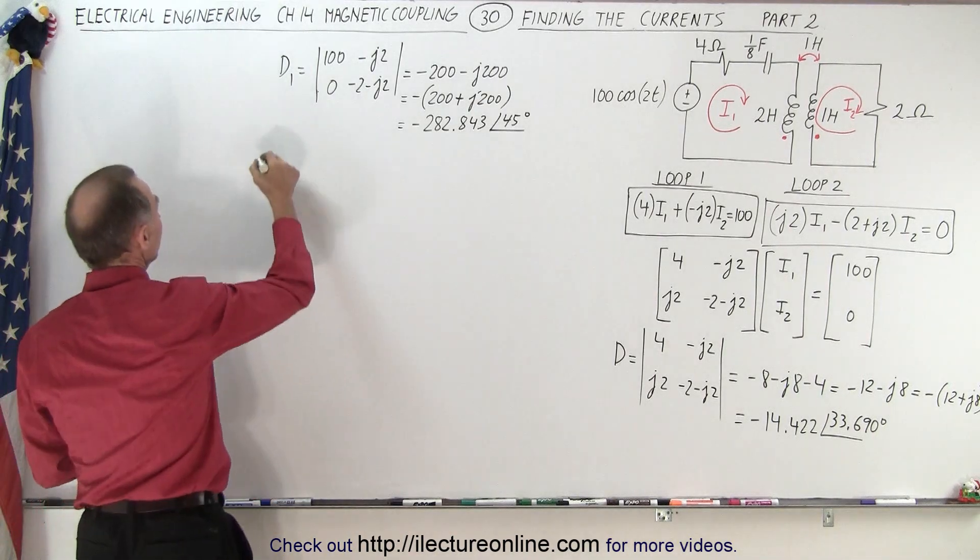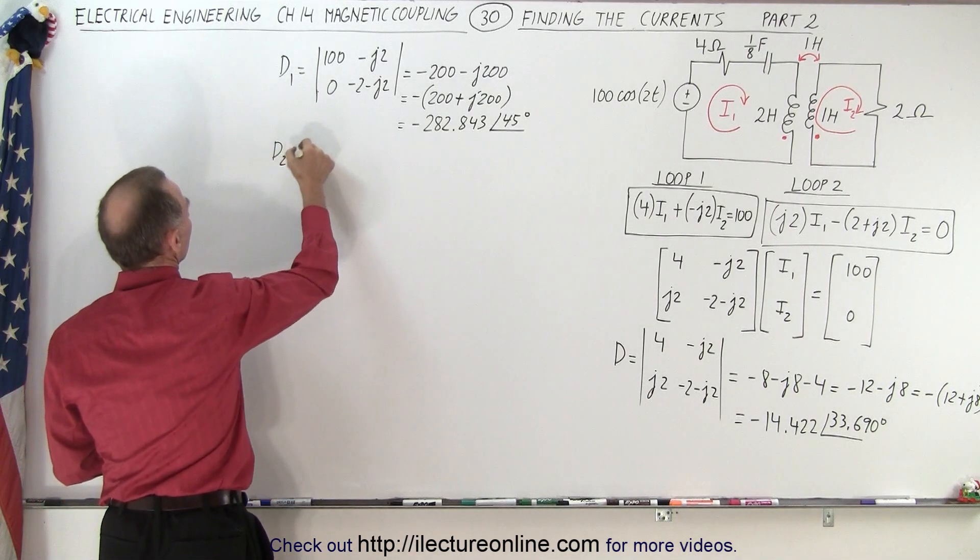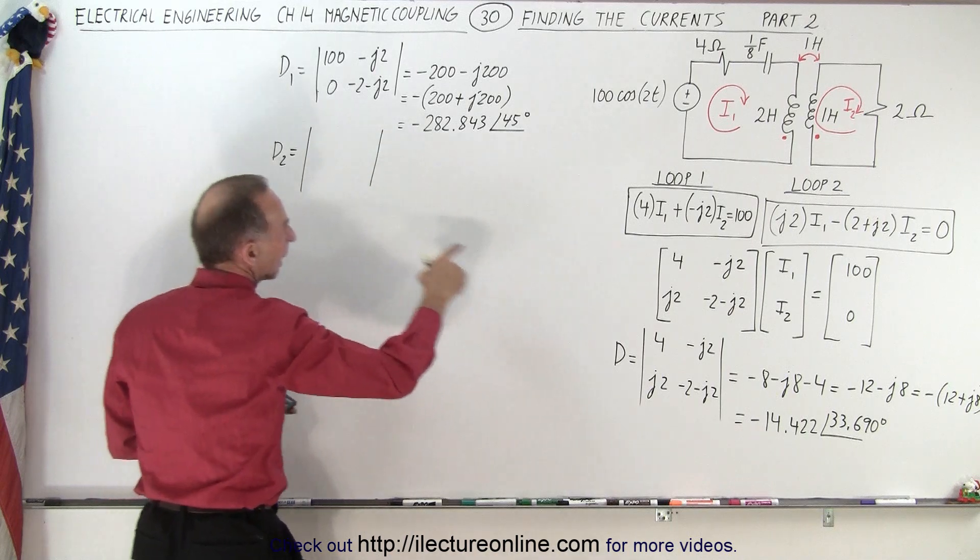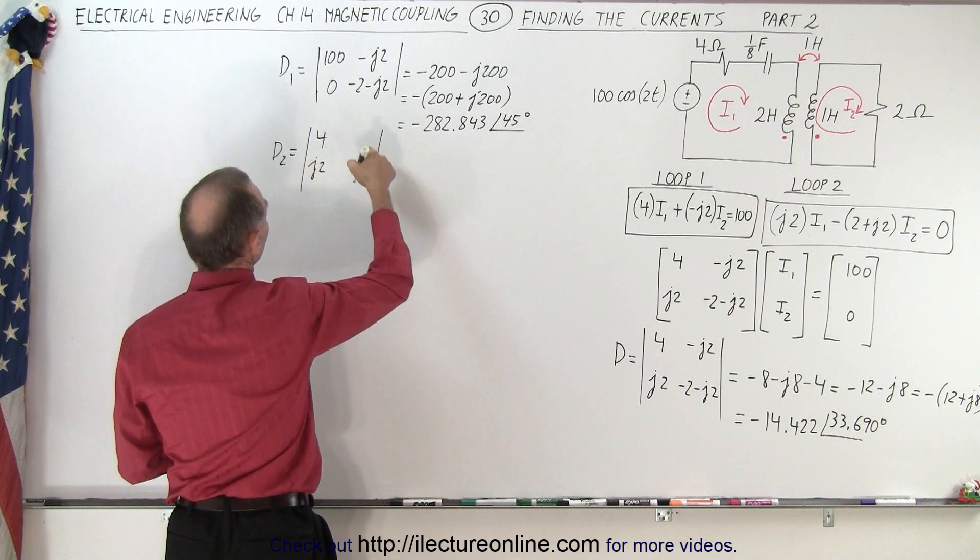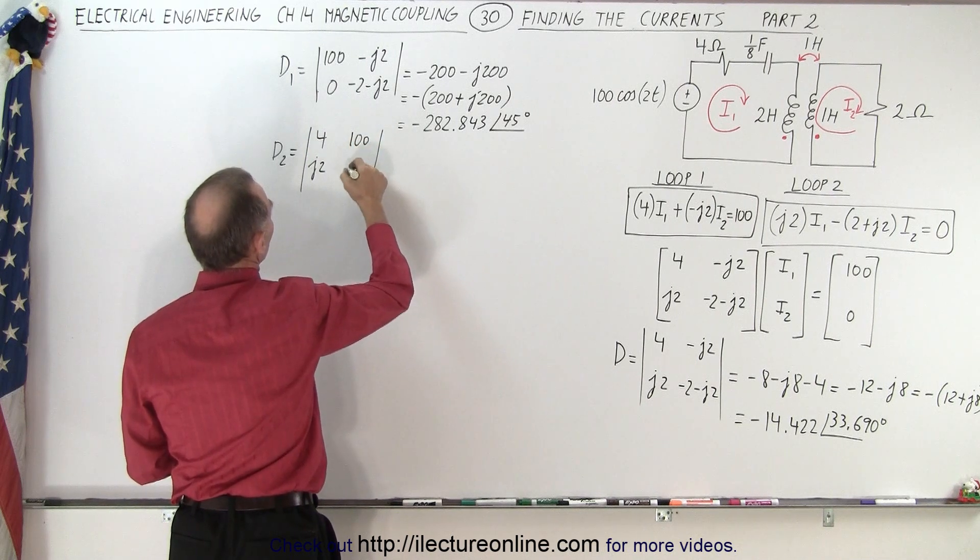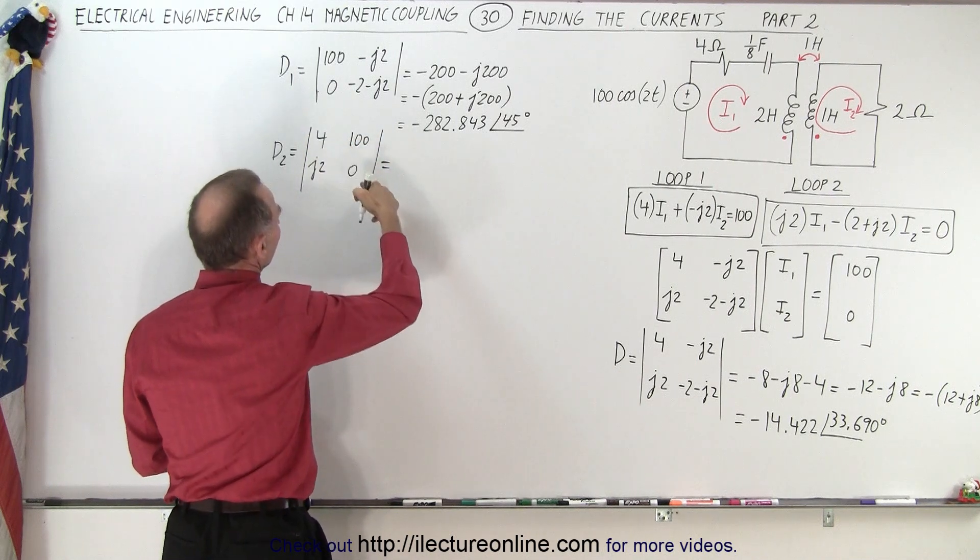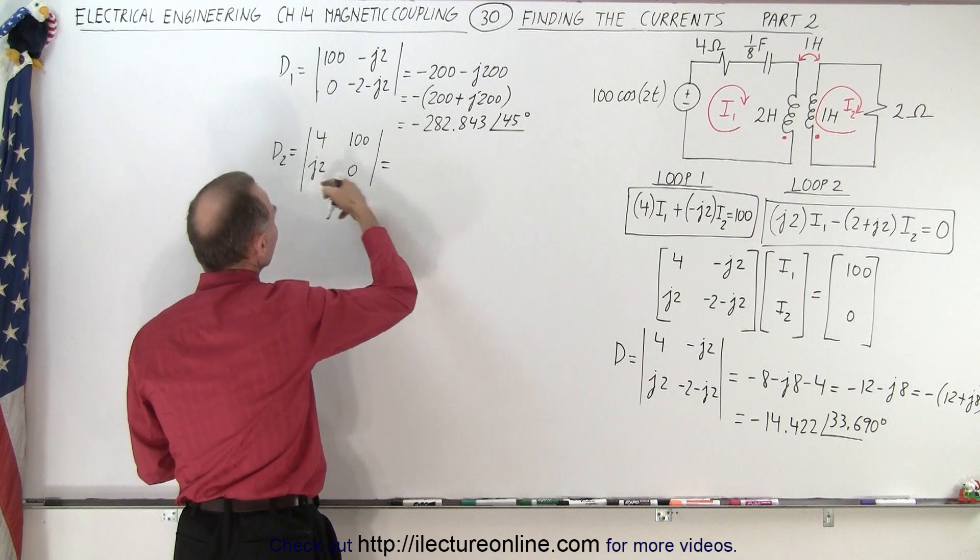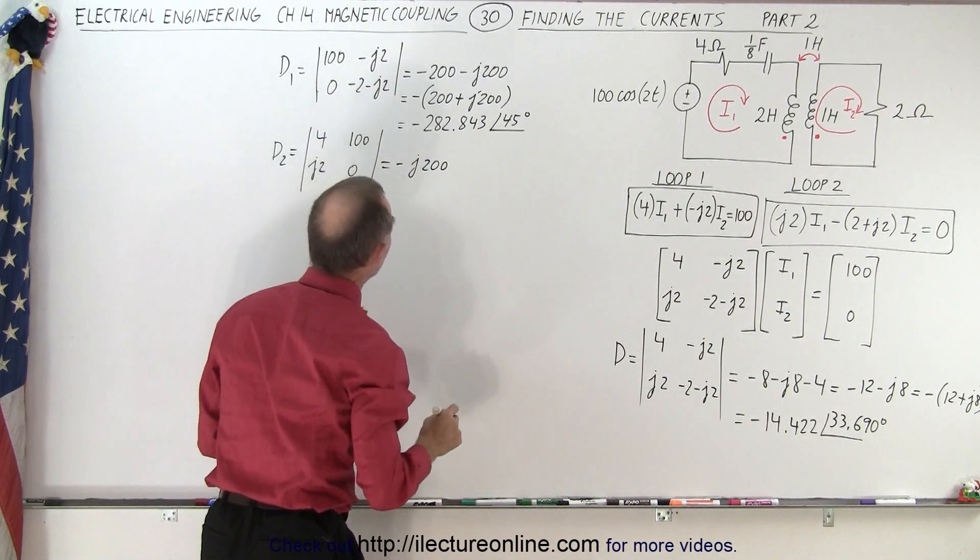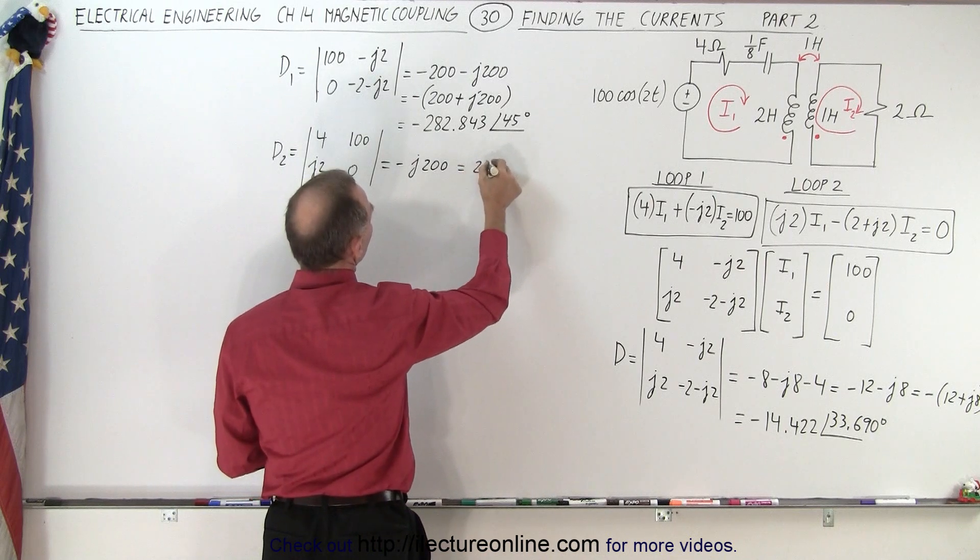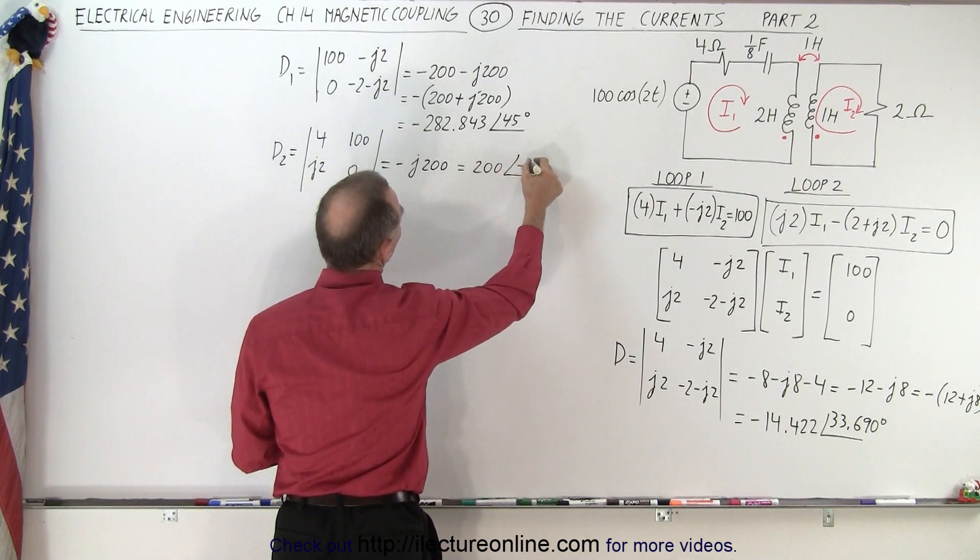Now we find D2. So we get the first column back, which is 4 and J2, and the second column becomes 100 and 0. Notice when I multiply those two I get 0. I get minus J200, which is equal to 200 with a phase angle of minus 90 degrees.